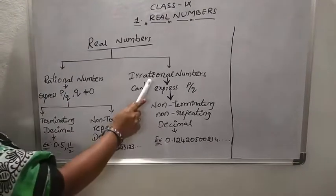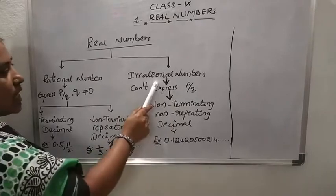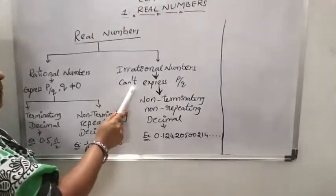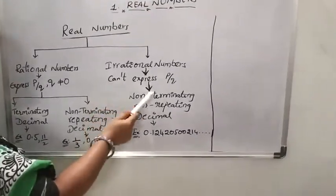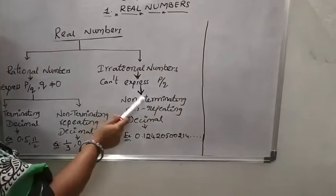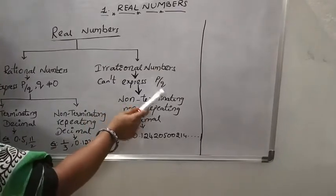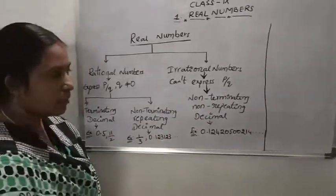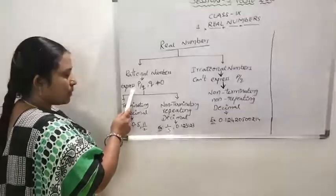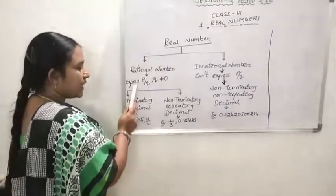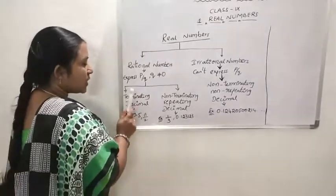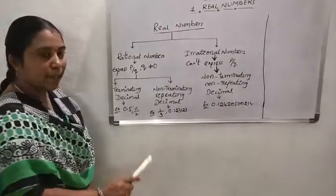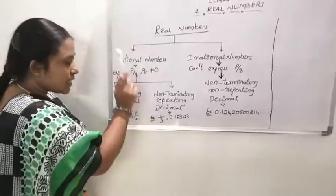Irrational numbers means we can't express any number in the form of p by q. Such type of numbers are called as irrational numbers. From rational numbers, again it is of two types: terminating decimal and non-terminating repeating decimal.